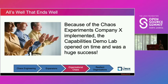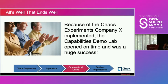The capability lab was looking a lot better. Those three major risks were mitigated, dealt with, and the chaos experiments gave visibility into those risks. Company X was able to open the lab on time and actually got a pretty good contract out of it from one of the guests that showed up. All's well that ends well.